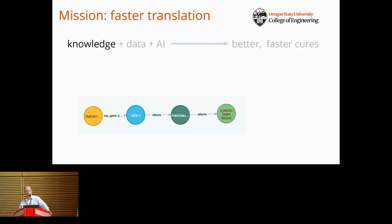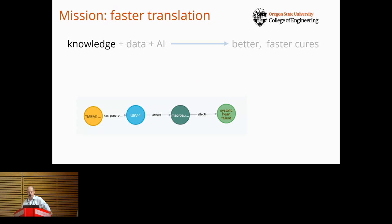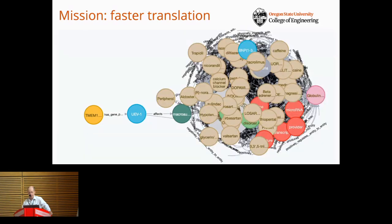We're trying to leverage biomedical knowledge that's now available in structured forms from various knowledge bases. In this little knowledge graph, the gene TMM1 encodes the protein UEV1, which affects the process autophagy, which affects the risk of heart failure. More generally, the knowledge graph around any one concept is quite dense — this is what necessitates computational methods.